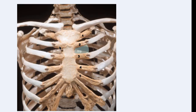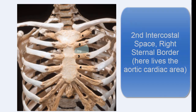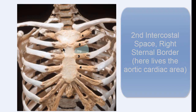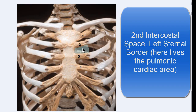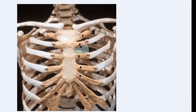The aortic area is right here — that's the second intercostal space, below the second rib, at the mid-sternal border. Here's the pulmonic area. You go straight across, find the rib, drop down, and the pulmonic cardiac area is right here.